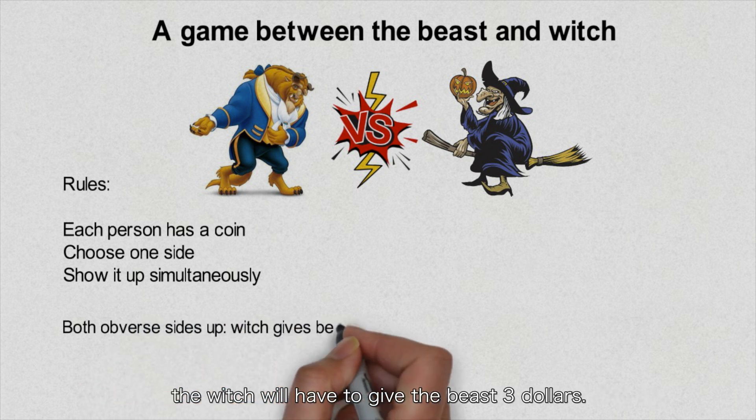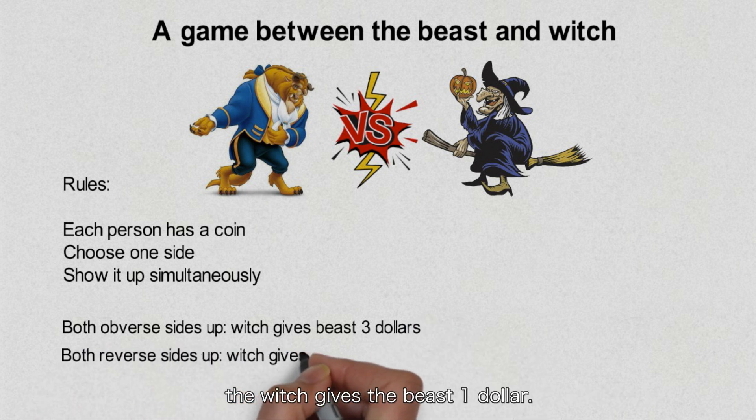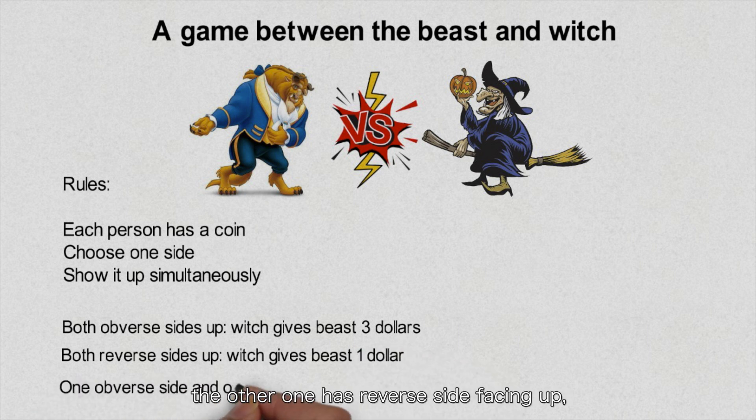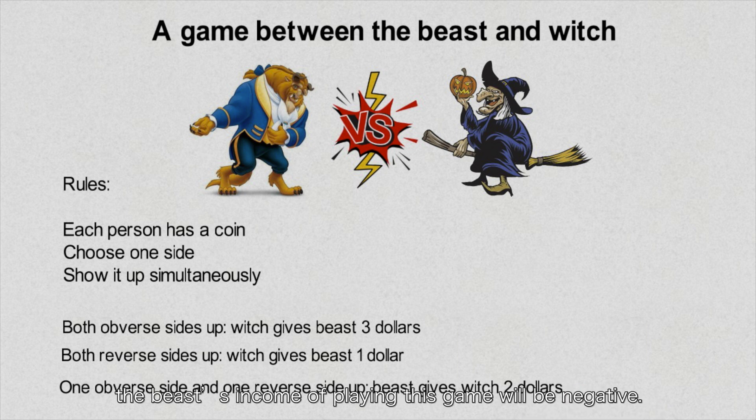If both coins have their obverse side facing up, the witch will have to give the beast $3. If both coins have reverse side facing up, the witch gives the beast $1. If one coin has obverse side facing up and the other has reverse side facing up, then the beast has to lose $2 to the witch.